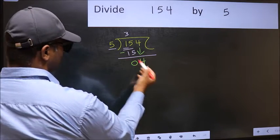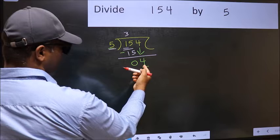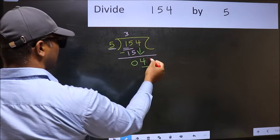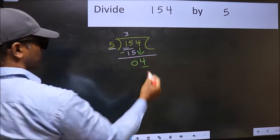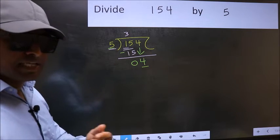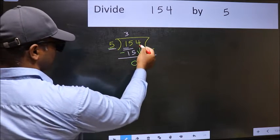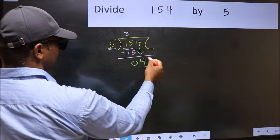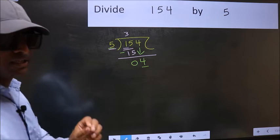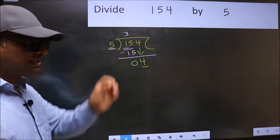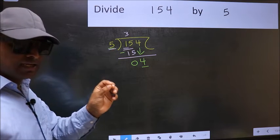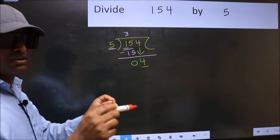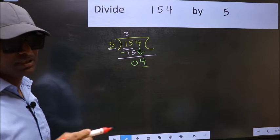Here we have 4 and here 5. 4 is smaller than 5. So what many do is they directly put dot and take 0, which is wrong. Why is it wrong? Because just now you brought this number down, and in the same step you want to put dot and take 0. I repeat: bringing the number down and also putting dot and taking 0, both at the same step, you are not supposed to do.